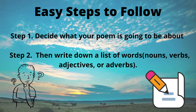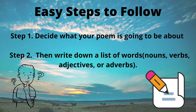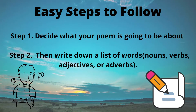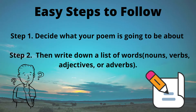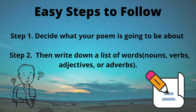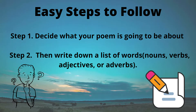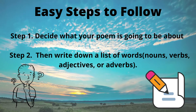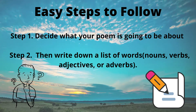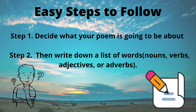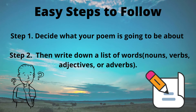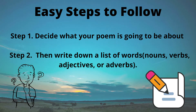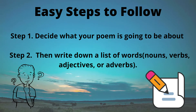Here are some helpful steps to guide you in writing an iambic pentameter. First, decide what your poem is going to be about. If you have a given topic, think about the specific things you want to write about in the poem. Then, write down a list of words — such as nouns, verbs, adjectives, or adverbs — that remind you of the topic and specific images related to it. Try to list down synonyms of the words you have already written down.